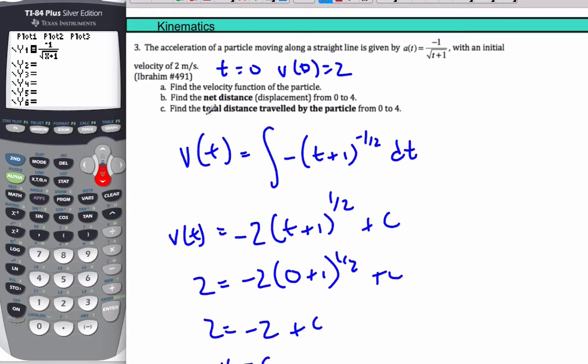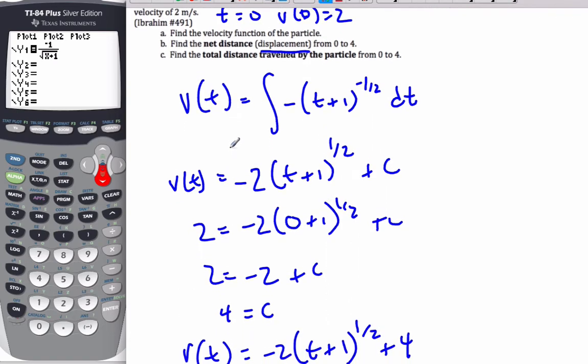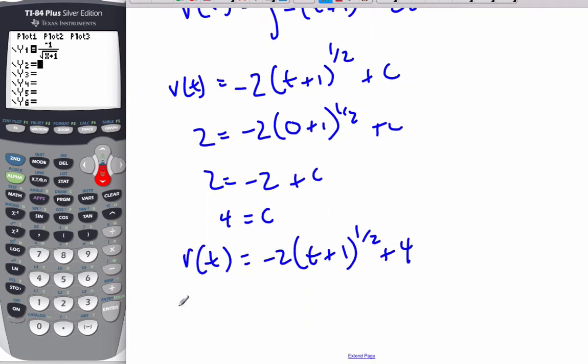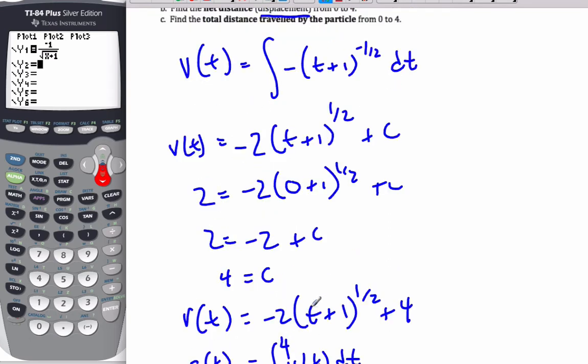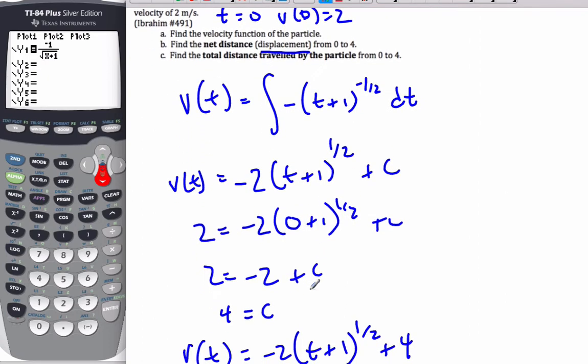Okay, now it says find the net distance, or the displacement, from zero to four. Well, if I want to find the displacement, the net distance, the displacement from zero to four is going to simply be the integral of the velocity function, v of t, and I'm going to do it from zero to four. That will find me the net distance.